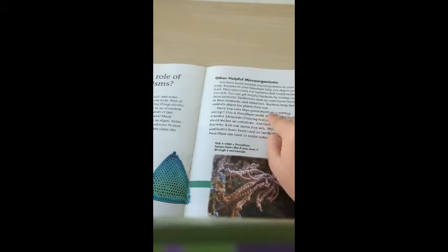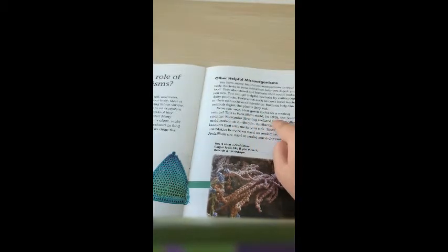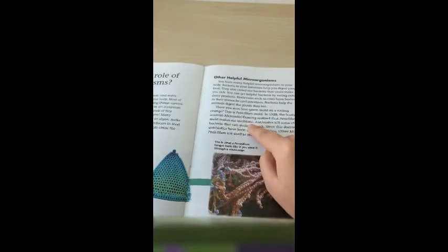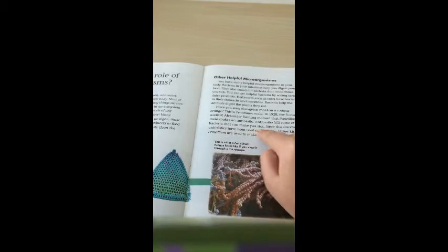Have you ever seen blue-green mold on a rotting orange? This is penicillium mold. In 1928, the Scottish scientist Alexander Fleming realized that penicillium mold makes an antibiotic. Antibiotics kill some of the bacteria that can make you sick.